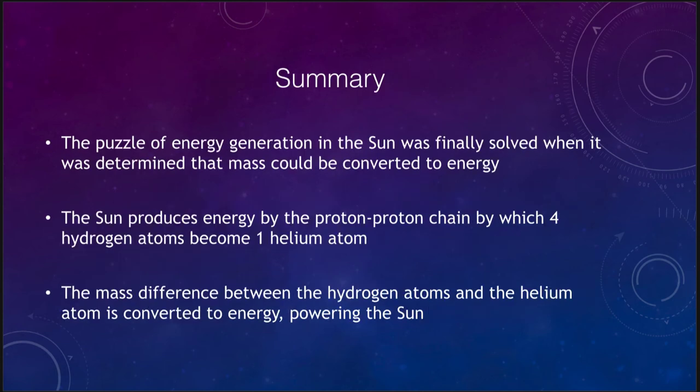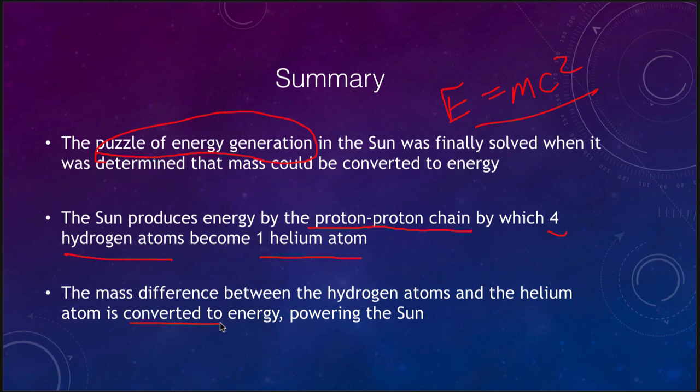Let's finish up with our summary. We talked about the puzzle of energy generation in the sun and it was solved by Einstein telling us that there is a relationship between matter and energy. Mass is just another form of energy and we can convert mass to energy giving us large amounts of energy. The sun produces energy by using the proton proton chain, four hydrogen atoms in net becoming one helium atom. The mass difference between the hydrogen atoms and the helium atom is converted fully to energy by Einstein's equation and that going on consistently is sufficient to power the sun for 10 billion years.